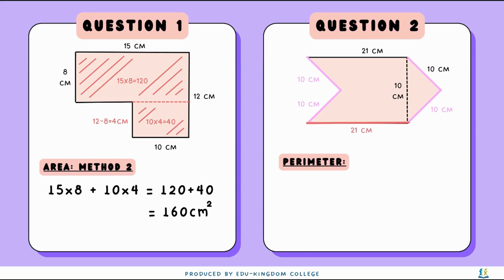All we have to do now is add them all together. So we have 21 times 2 plus 10 times 4, which gives us 42 plus 40, giving us an answer of 82 centimeters as the perimeter.